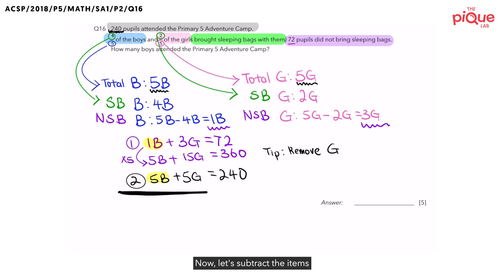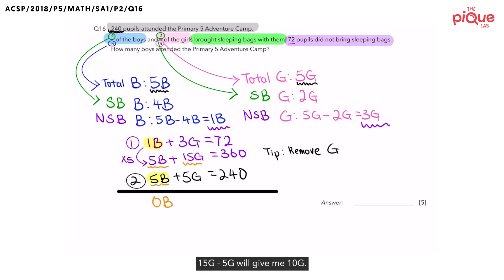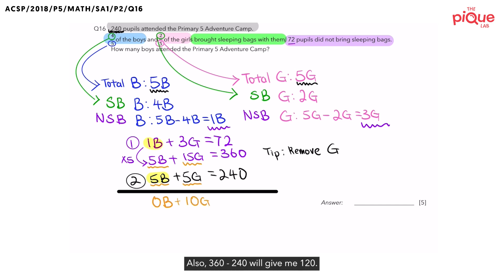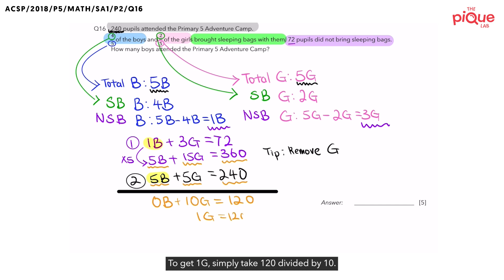Now, let's subtract the items in equation 2 from the modified equation 1. We can see that 5B minus 5B gives 0B. 15G minus 5G gives 10G. And 360 minus 240 gives 120. We now have 10G equals 120. To get 1G, simply take 120 divided by 10.